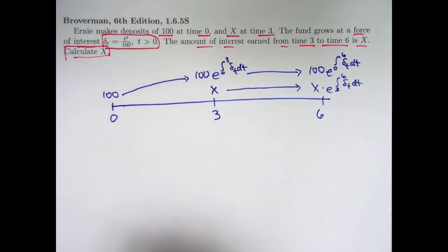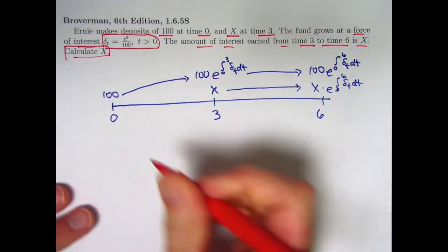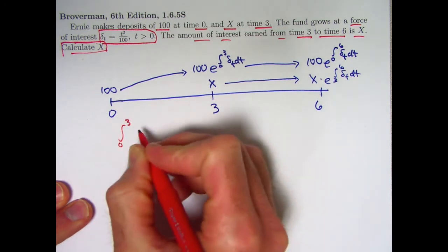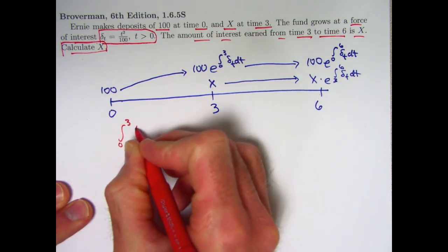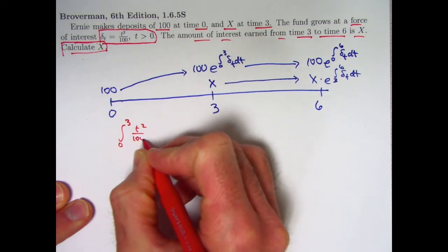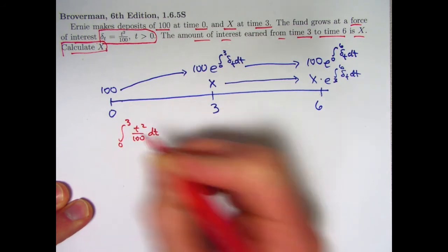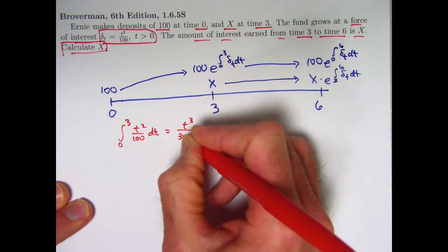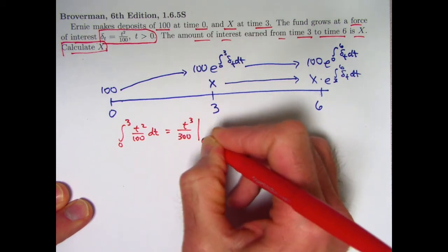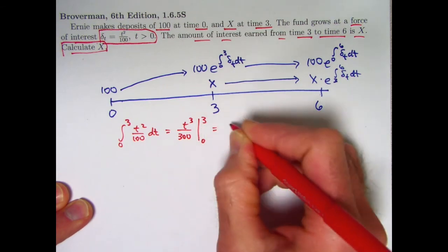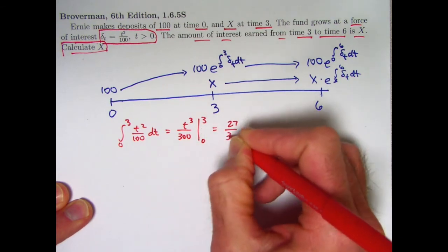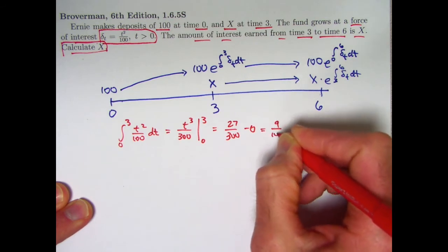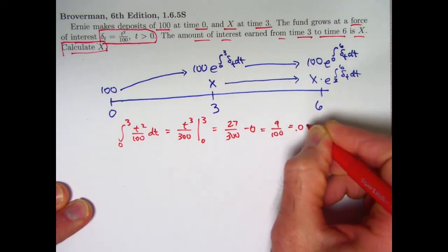Let's do the integrals first. So what about the integral from 0 to 3? Here's our force of interest, t squared over 100. Antiderivative is going to be t cubed over 300. That needs to get evaluated from 0 to 3. It's going to give you 27 over 300 minus 0, which is the same as 9 over 100 or 0.09.